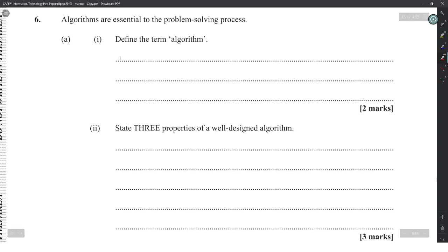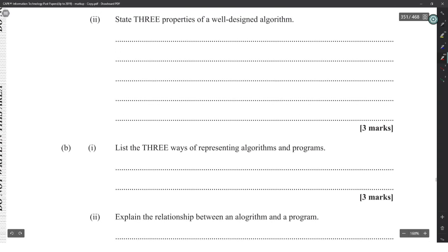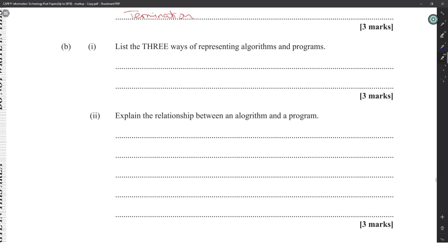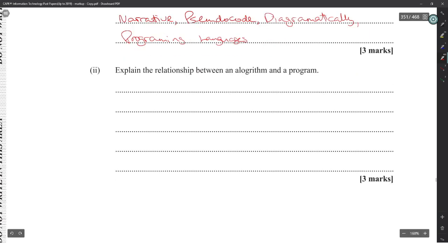Define an algorithm: a sequence of steps to solve a problem in a finite amount of time. Three properties of a well-designed algorithm: it is finite, has no ambiguity, has control flow, and terminates. Any three of these properties would be acceptable. Three ways of representing algorithms: narrative, flowcharts/diagrammatically, and program code.